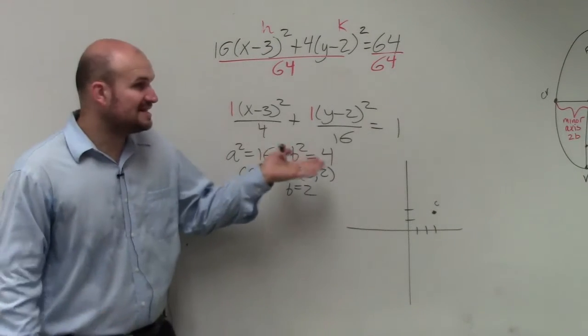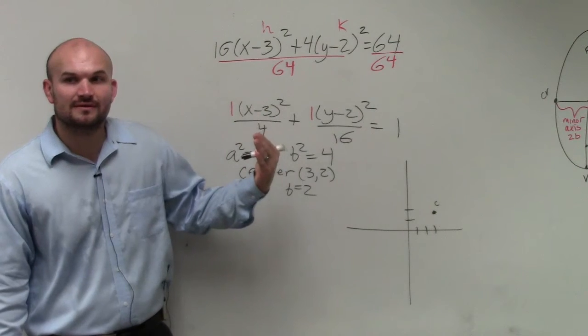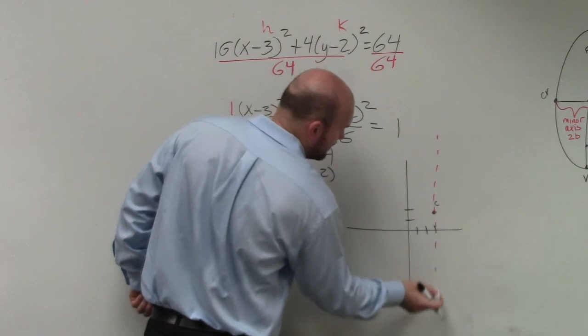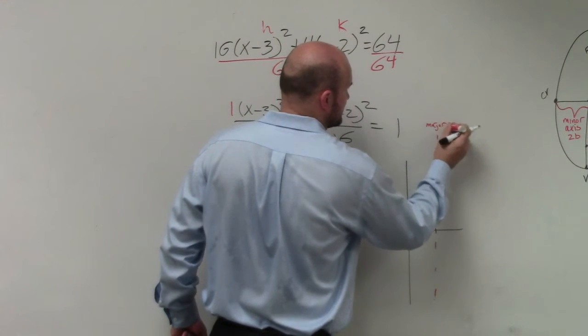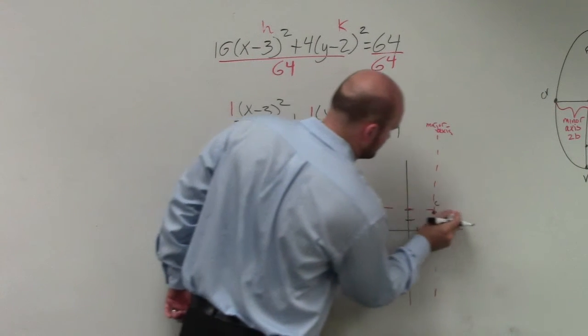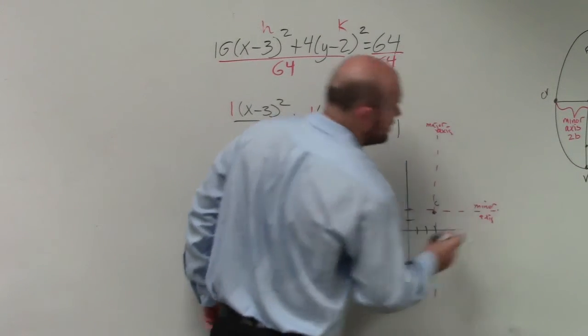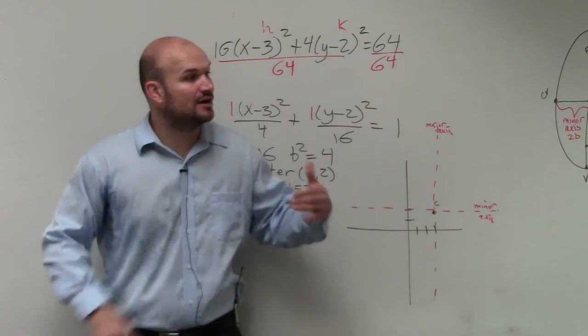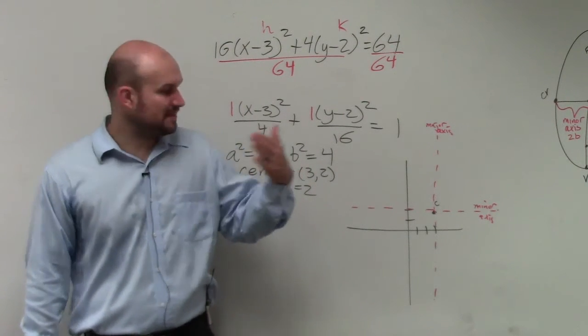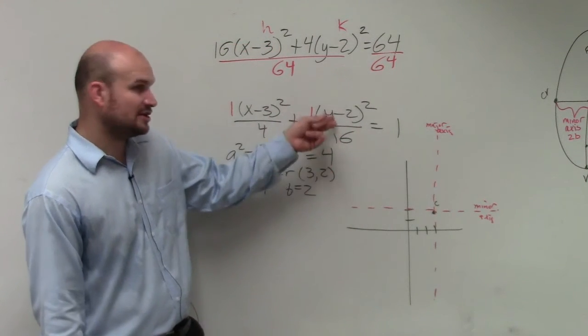Is the major axis vertical or horizontal? Vertical. So I'll draw this little line - that is my major axis. And this is my minor axis. Because the major and minor axes are perpendicular to each other, and the major axis is vertical because the larger a is under the y.